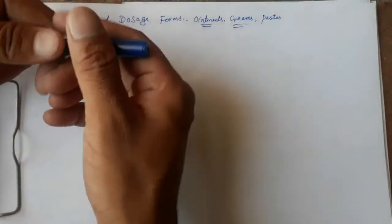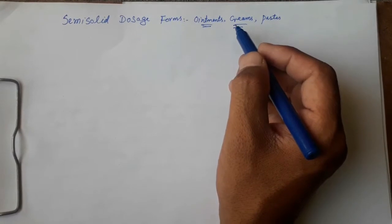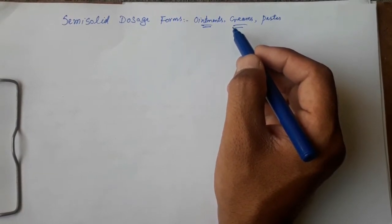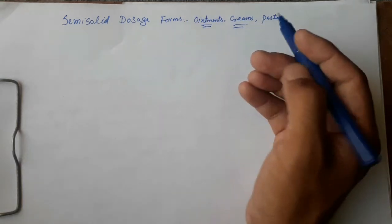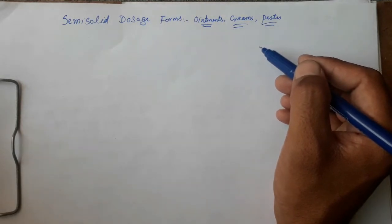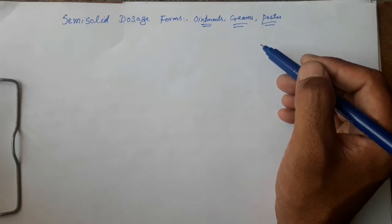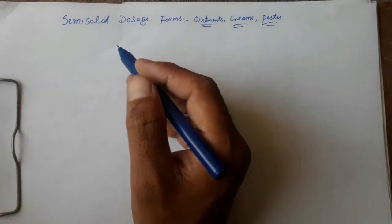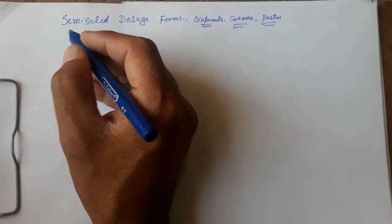Creams are essentially miscible with the skin secretions and are intended to be applied to the skin or certain mucous membranes for protective, therapeutic, or prophylactic purposes, especially where a degree of occlusion is not necessary. Pastes are semi-solid preparations that contain a large proportion of solids and are intended for application to the skin. They are more stiff, less greasy, more absorptive, and more concentrated than ointments.